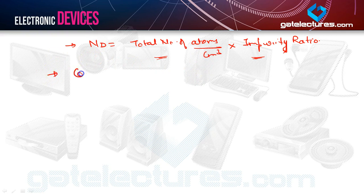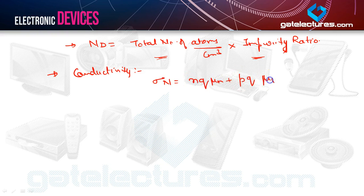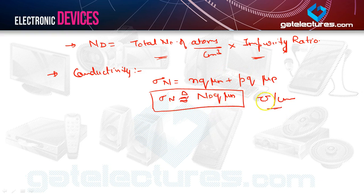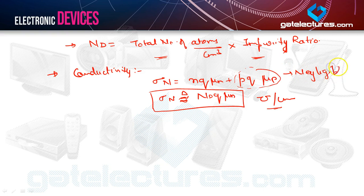Looking at the conductivity of an N-type semiconductor, sigma N equals N·Q·μN + P·Q·μP. We can approximate this to ND·Q·μN, since the conductivity of an N-type semiconductor is majorly due to the majority charge carriers. The conductivity due to minority charge carriers is considered negligible by default.